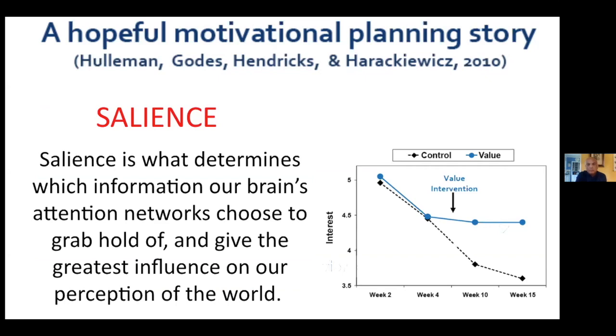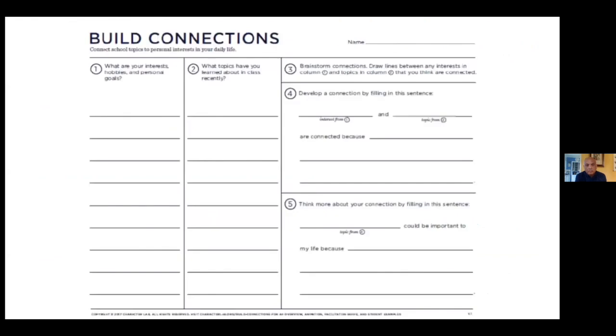This indicates that we as teachers can do things during learning that change our students' perceptions and attitudes simply by altering one small part of the learning situation. That part, in cognitive education, is called salience. Salience is what determines whether your brain's attention networks are going to grab hold of something in the learning environment and give it great influence on your perception of the world and of learning.